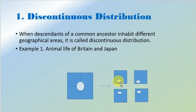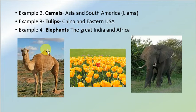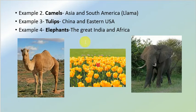Here, we are able to see that the descendants — these white dots — are the descendants of the common ancestors, distributed in different geographical areas by the compartmentalization of the earth, and the process is known as discontinuous distribution. The example of discontinuous distribution is the animal life of Britain and Japan, which is very much similar. The second example is the camel — the species of camels of Asia and South Africa are very much similar, and the species of camel seen in South America is given the name Llama. Likewise, tulips are also available in China and Eastern USA, and elephants are seen in two continents: Great India and Africa.